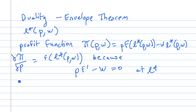And likewise we have partial pi partial W is minus L star, again for the same reason because the first order condition is satisfied so all the other terms drop out.